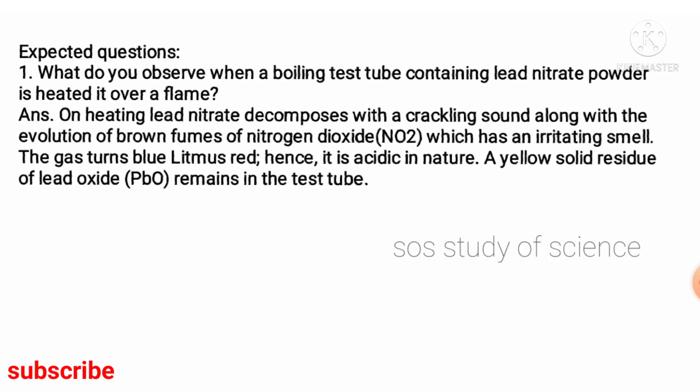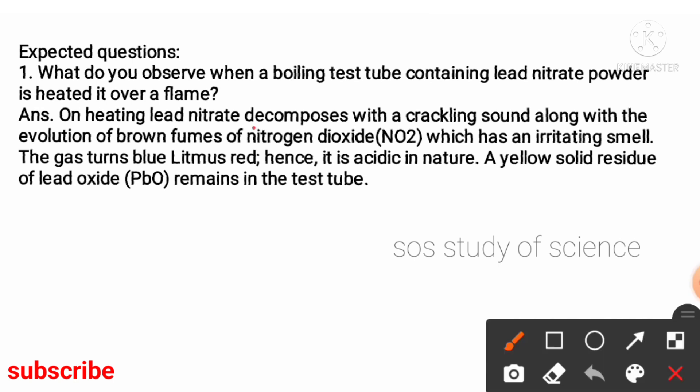The first expected exam question is: what do you observe when a boiling test tube containing lead nitrate powder is heated over the flame? On heating, lead nitrate starts to decompose — it is an example of a decomposition reaction. It also produces a crackling sound and releases brown fumes, which are nitrogen dioxide.